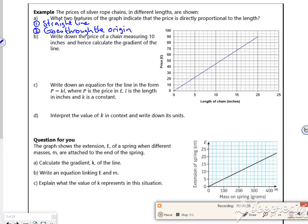It says write down the price of a chain measuring 10 inches. So 10 inches, are we saying 45 pounds there? So 10 inches is 45 pounds. Hence calculate the gradient. So it's a change going up over the change going across. So it's 4.5. Does it ask us for the units? Because it'd be like pounds per inch, wouldn't it? So it'd be like pounds per inch, I guess, in terms of the units. It might say that, well it does say that later.